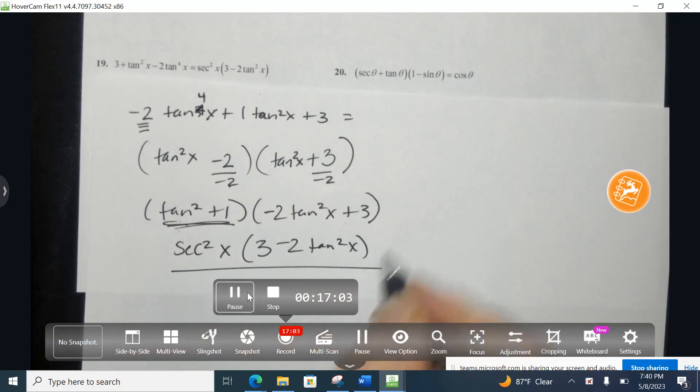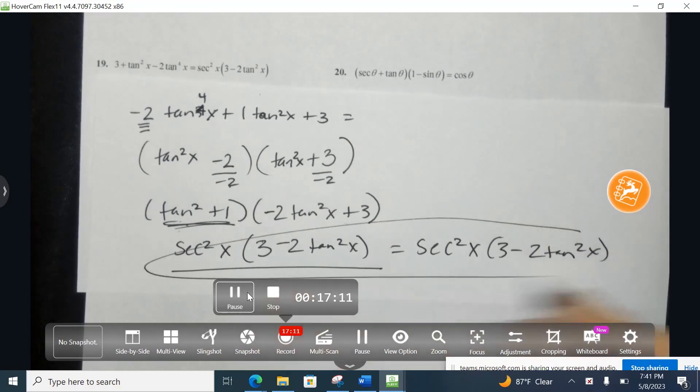So this is what I now have on the left-hand side, and this is, in fact, equal to the right-hand side. So I have verified this trig identity.